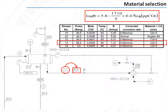The required input data for this calculation are shown on the heat and mass balance. Indeed, the heat and mass balance indicates for each stream the temperature, the pressure, as well as the composition. Therefore, the calculation of the corrosion rate can be done. This corrosion rate is then calculated over the entire facility's design life, such as 20 or 30 years, by simply multiplying the yearly corrosion rate by 20 or 30.